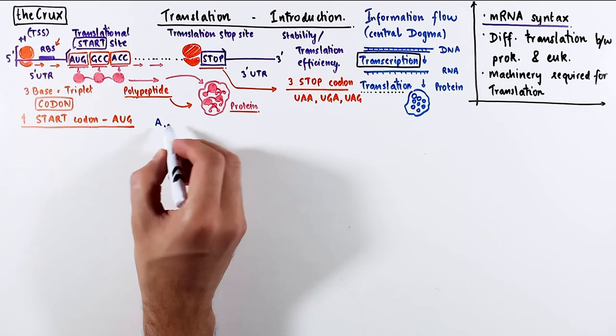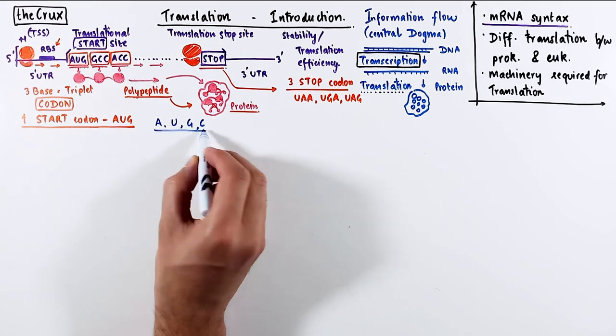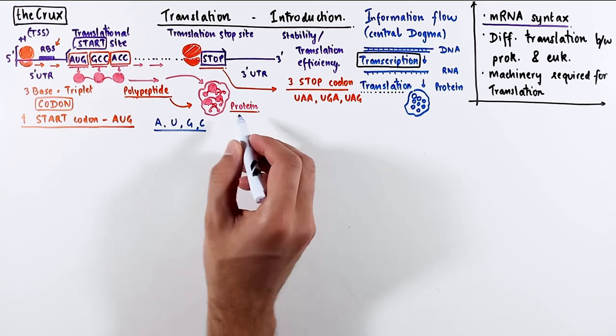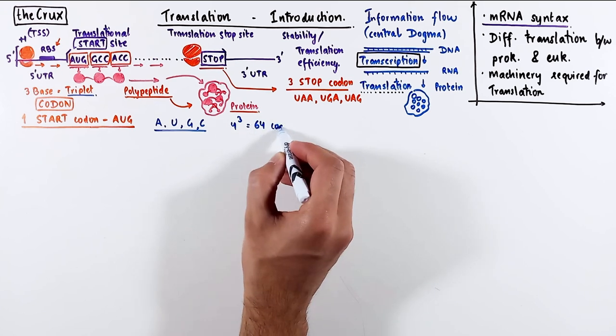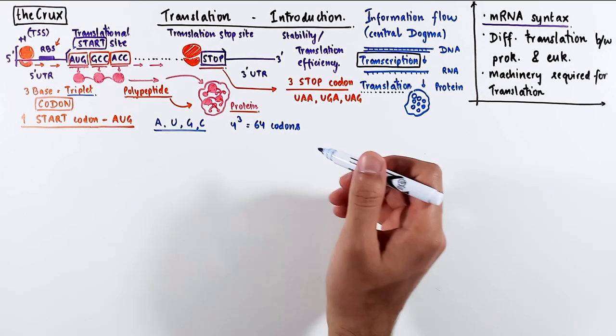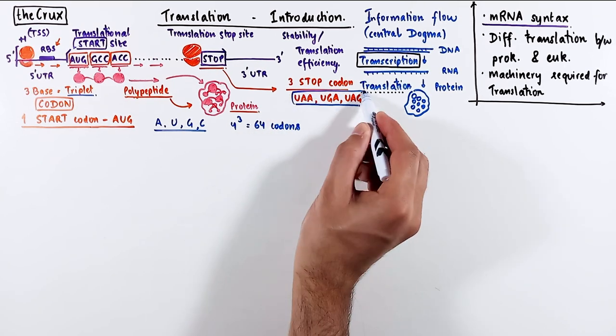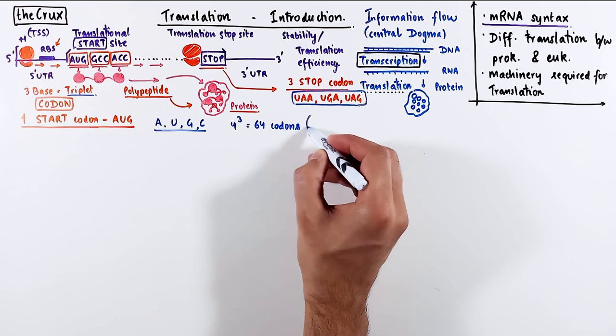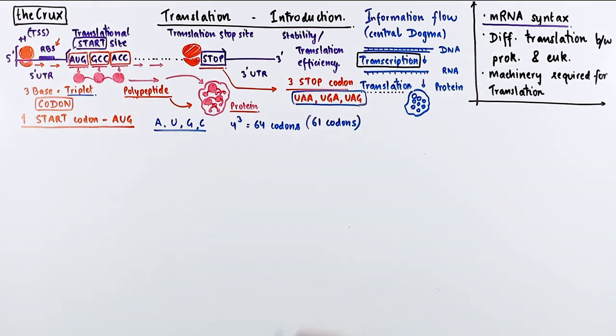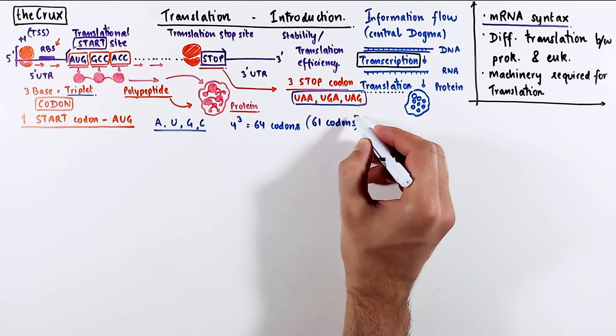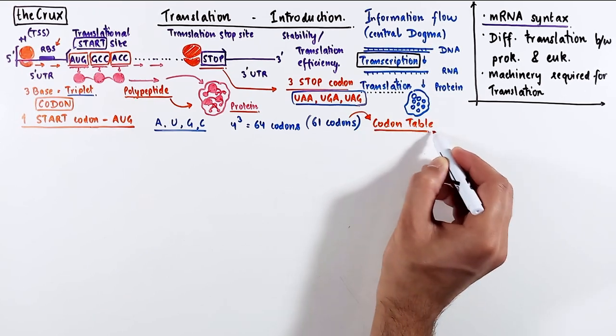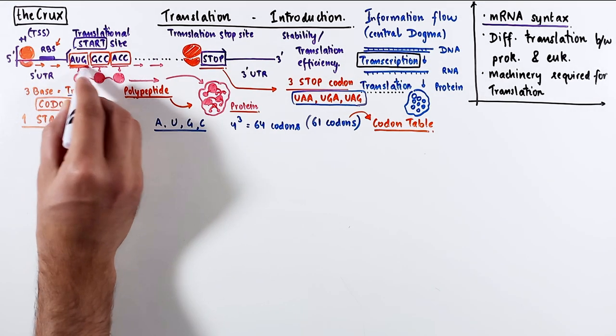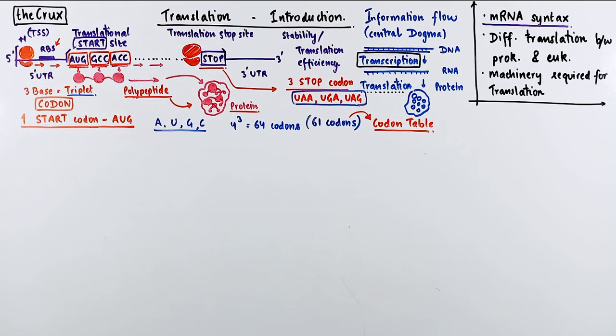Since there are four bases in mRNA, namely A, U, G, and C, and there are three bases that are read at once, you can have 64 different types of codons. Since there are three stop codons that we just mentioned, only 61 codons of these 64 code for some amino acid. You can find which codon translates to which amino acid by looking at the codon table. You can find this table online or in any standard biology textbook. So this was a generalized mRNA structure.